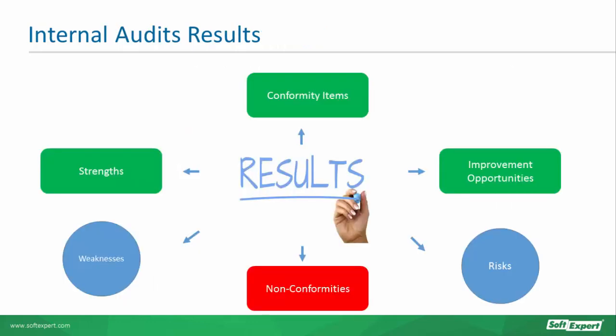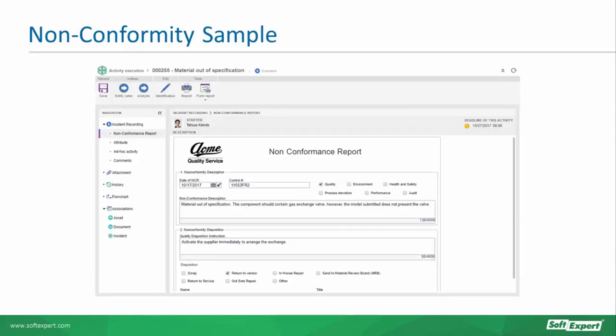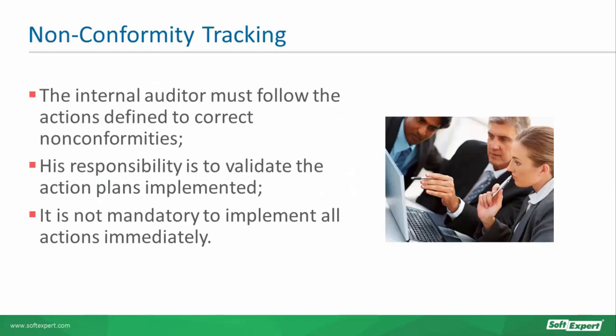Upon completion of audits, whether internal or external, the results are determined and whether or not they conform to the requirements of the QMS is defined. Strengths and weaknesses are listed as well as opportunities for improvements. This illustration represents what I have just said in a simple way. This is an example of a generic form for recording non-conformities. It is important that it allows for the registration of information such as customer, process, item of the standard, place of occurrence, audit criterion, criterion related to non-conformity, descriptions, as well as recommendations to resolve the deviation. It is important that the auditor monitor the non-conformity resolution actions.